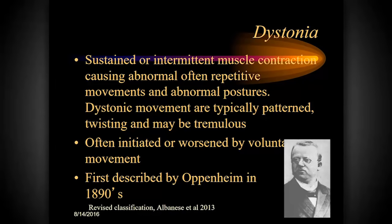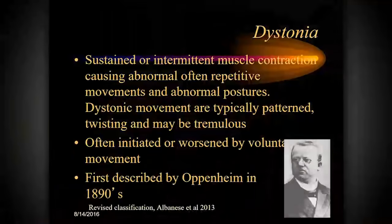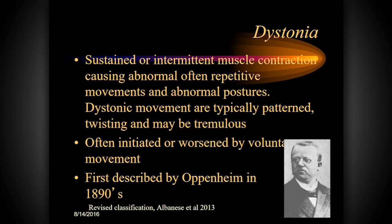Dystonia is not a new condition. It was first described by Dr. Oppenheim in the 1890s and, similar to Parkinson's disease, he made a very accurate description of the syndrome — and I stress, it is a complex of symptoms. Dystonia is not a diagnosis; there are a number of conditions under that big umbrella. His very accurate description was based on observation of four patients, and we kept his descriptive classification of dystonias up until very recently. This reference is to the revised classification of dystonia published in 2013.